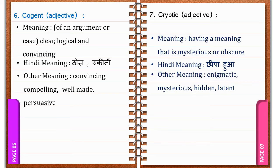Cryptic. C-R-Y-P-T-I-C. Cryptic. It's an adjective. It means having a meaning that is mysterious or obscure. In Hindi: Chipa huwa. Other meanings: Enigmatic, Mysterious, Hidden, Latent.